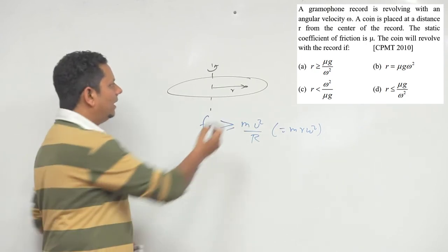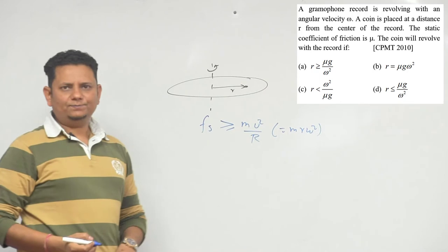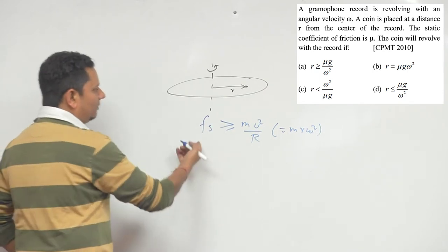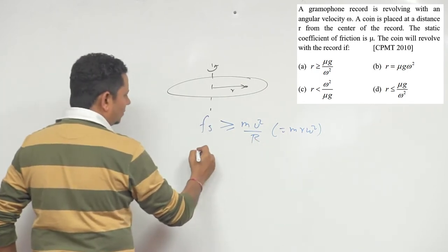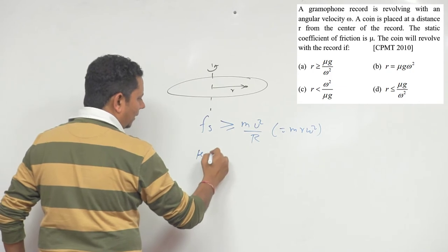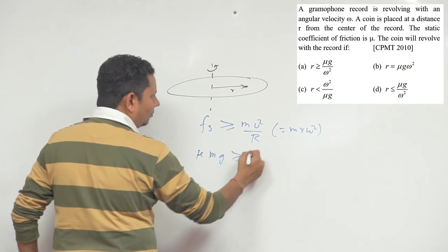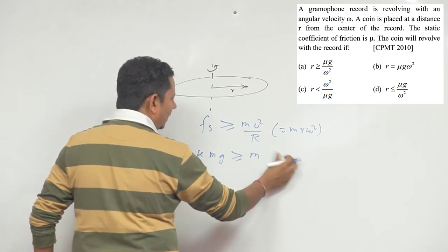Now let's substitute the values. The friction force equals μN, which is μmg. So we have μmg ≥ mrω².